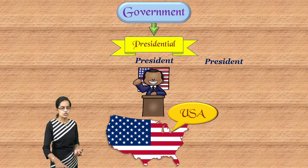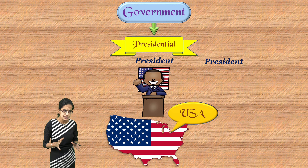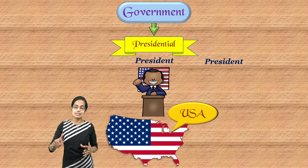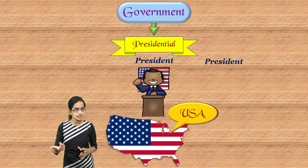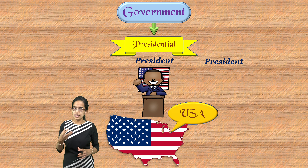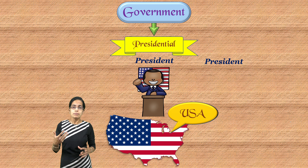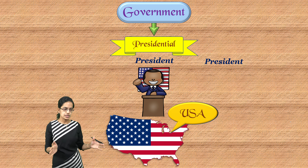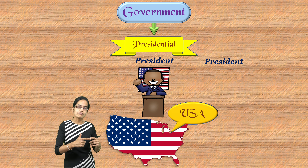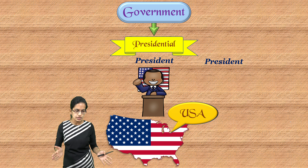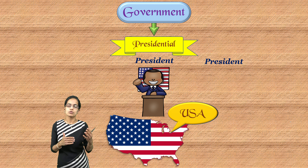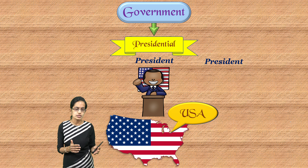The presidential form of government is one where the president is directly elected by the common people. Good examples are the United States and Mexico. The term is six years, and after every six years there is a fresh election. The election is conducted through a direct universal suffrage principle and is based, in the majority of cases, on a simple majority concept.